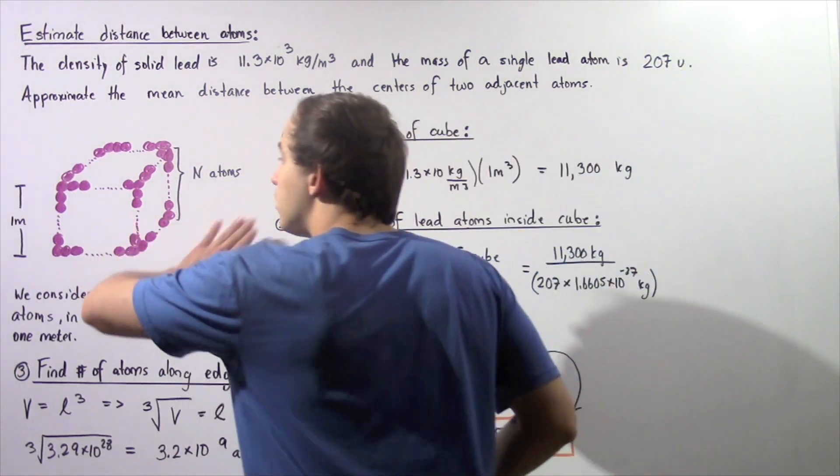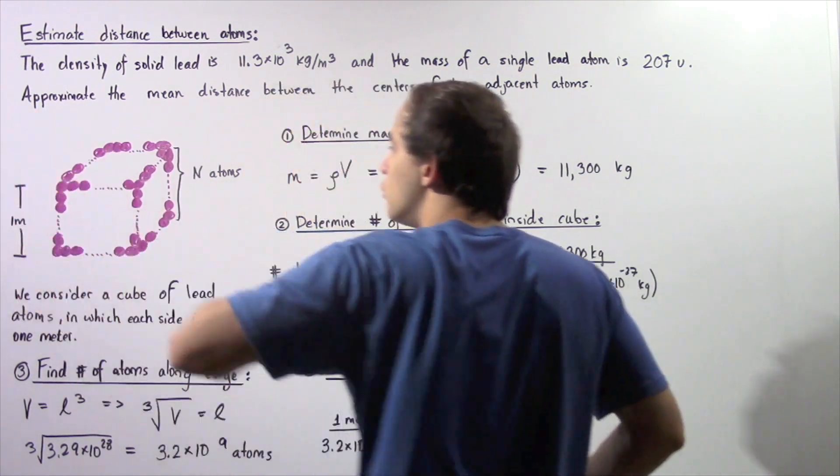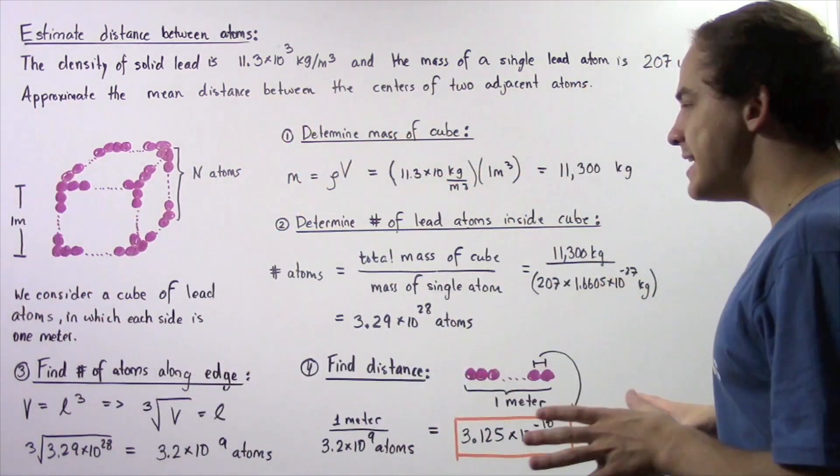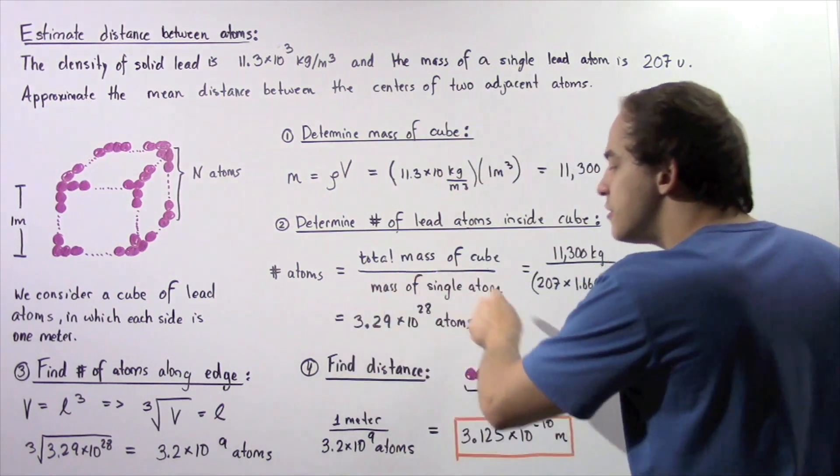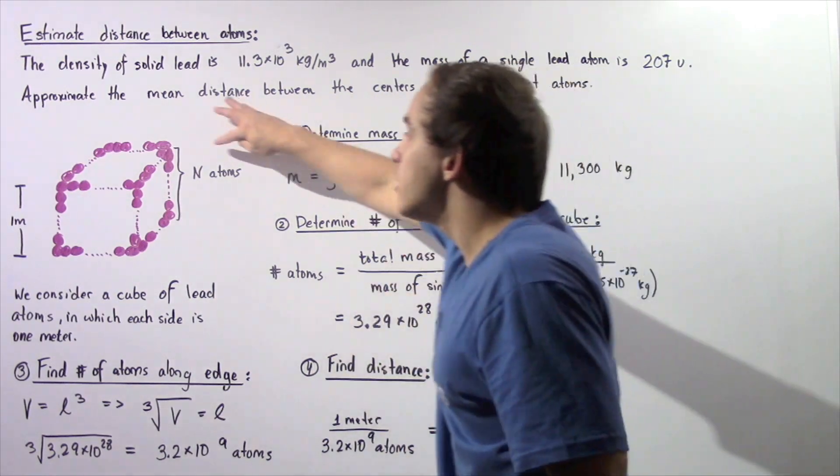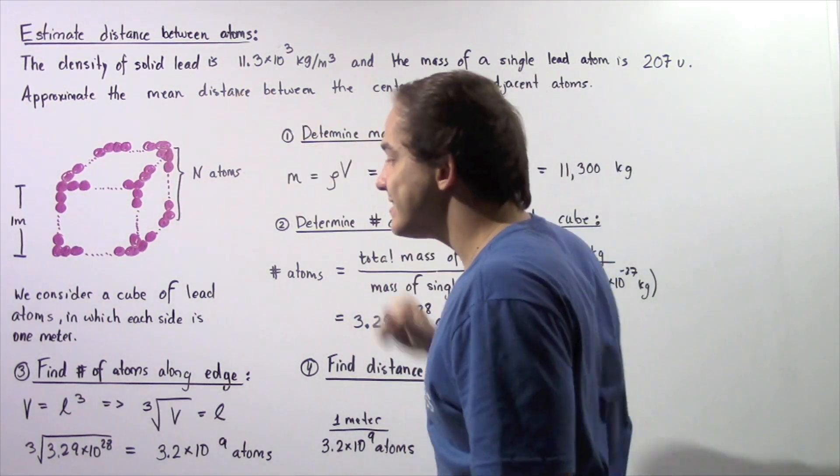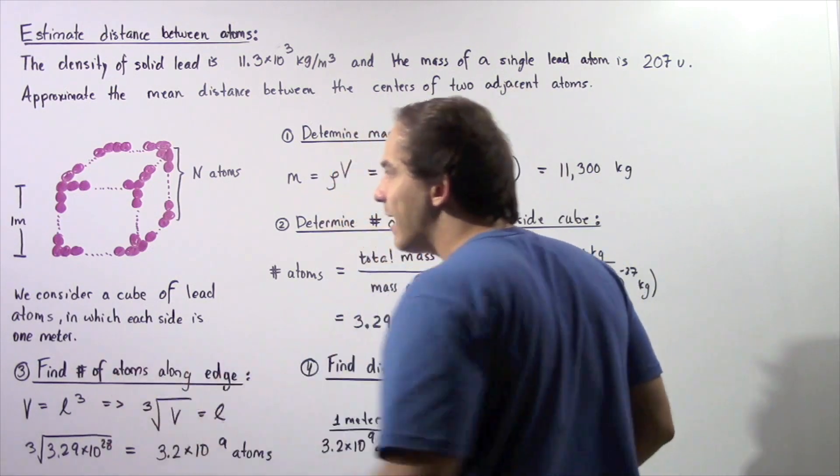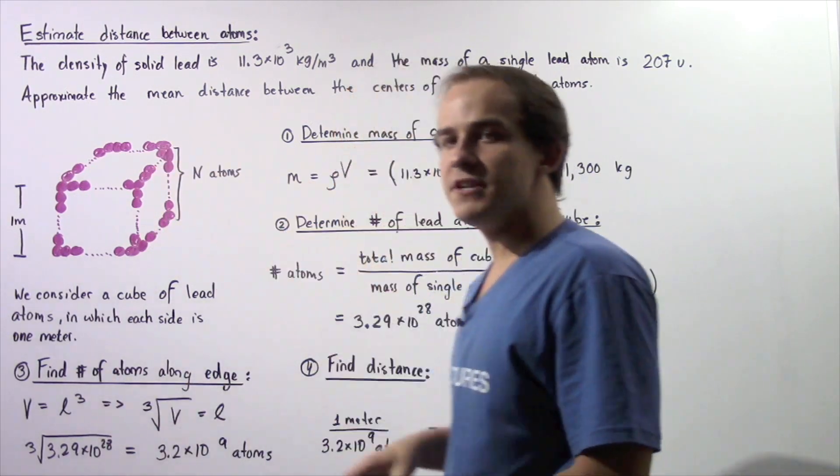Now, in step three, we want to use this value to determine the n number. So the n is simply the number of atoms along any given edge.